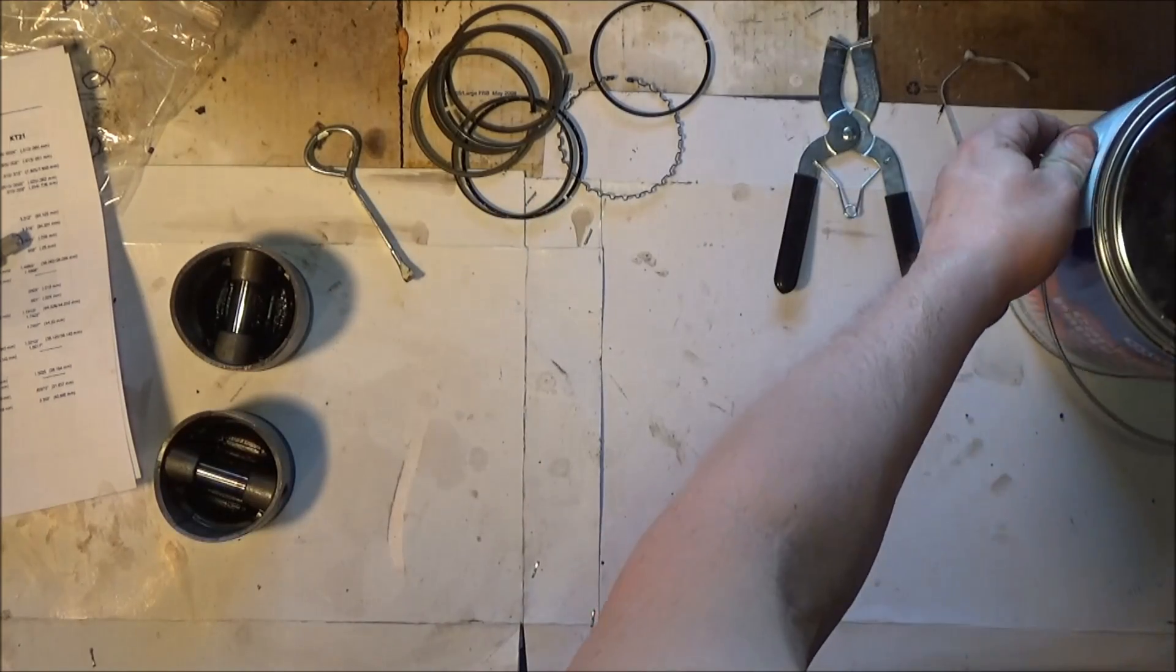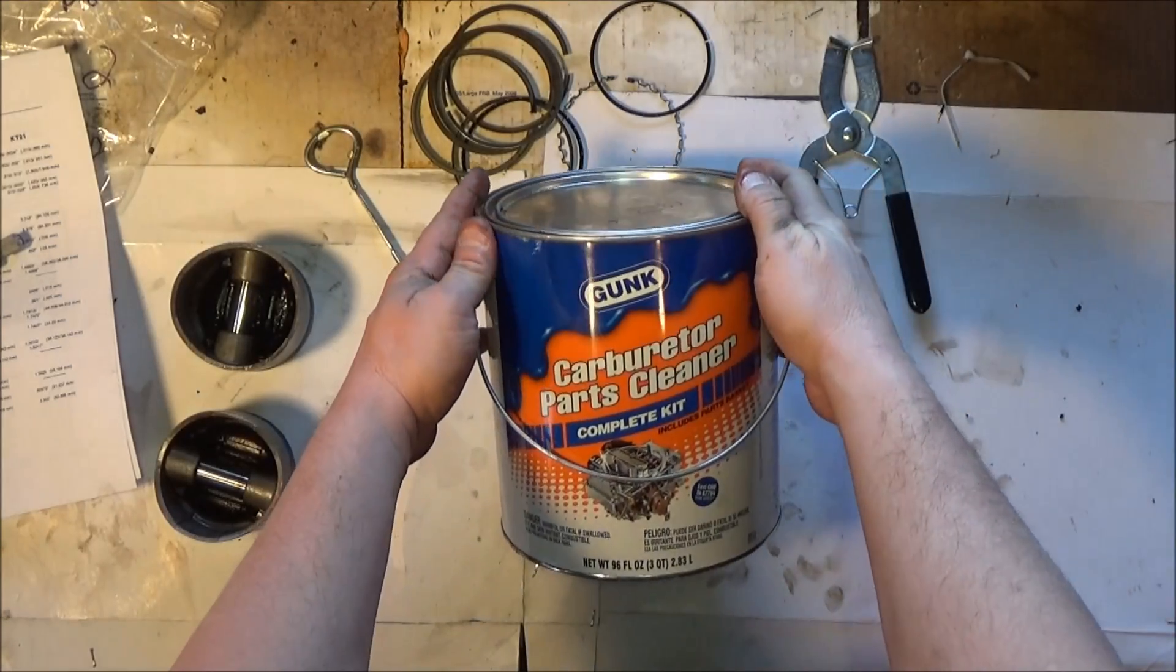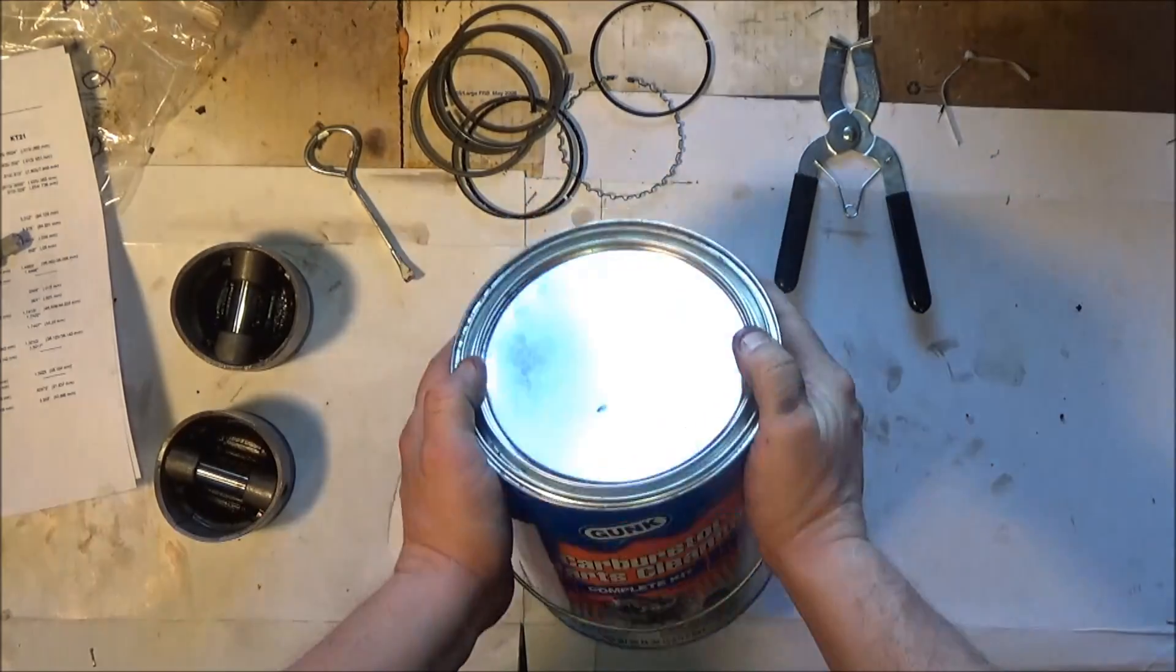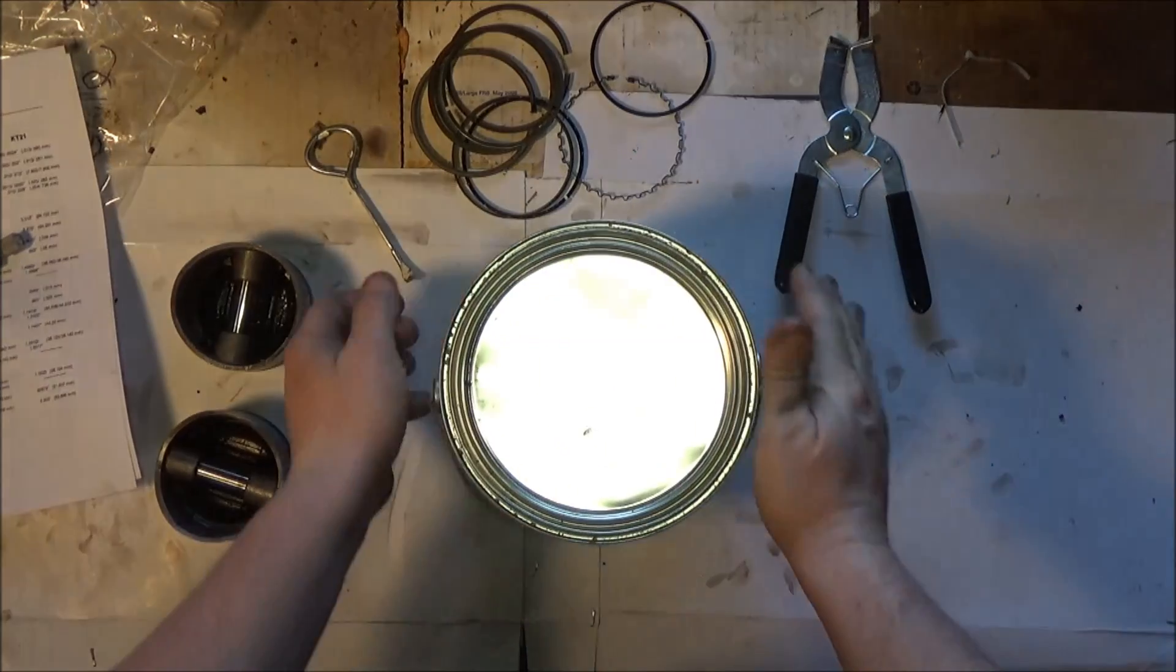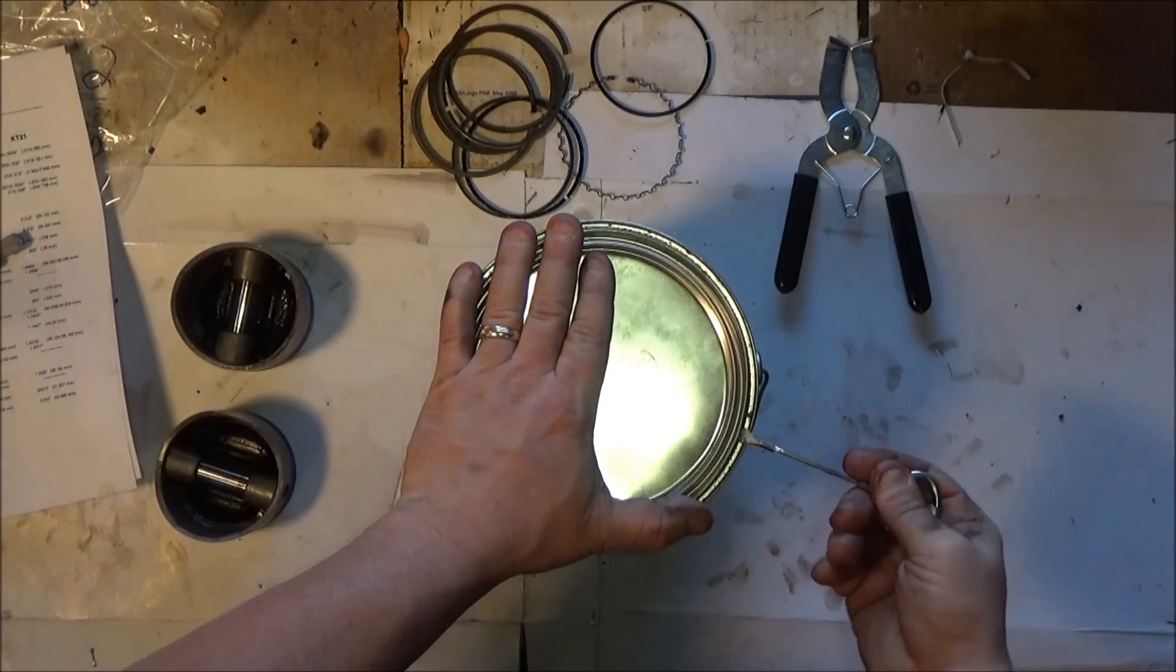Next, the best way I've found to get the carbon off is right here. Big can of carburetor cleaner. It will eat the crap out of that carbon.